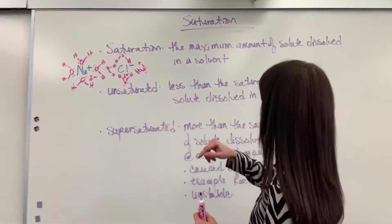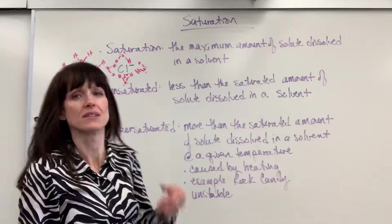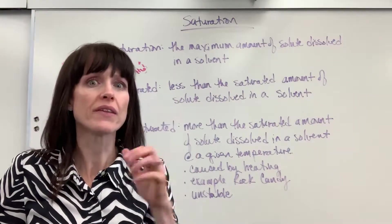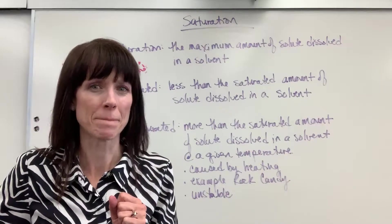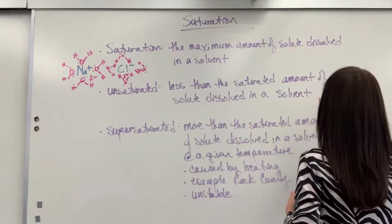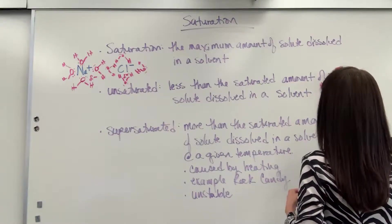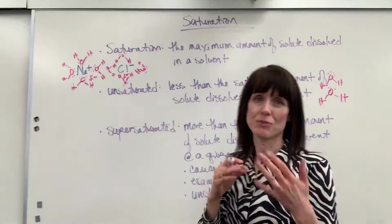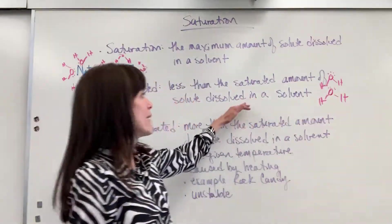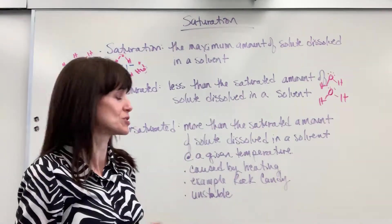Now, unsaturated, that simply means that there's less than the saturated amount of the solute dissolved in the solvent. So what does that tell you about the solvent? If we could draw the solvent, what would you see? Well, you'll see some water molecules that aren't surrounding any ions. They're just interacting with each other with hydrogen bonding. So you would have extra water because you don't have the maximum amount of the solute, the sodium chloride, those two ions.